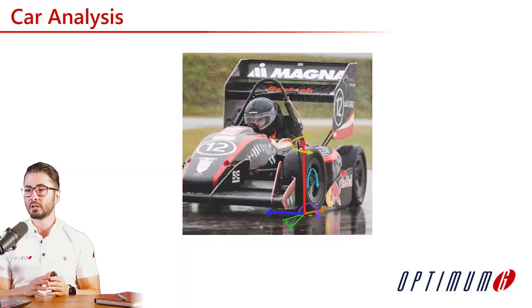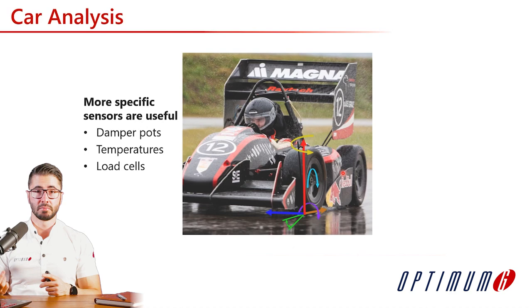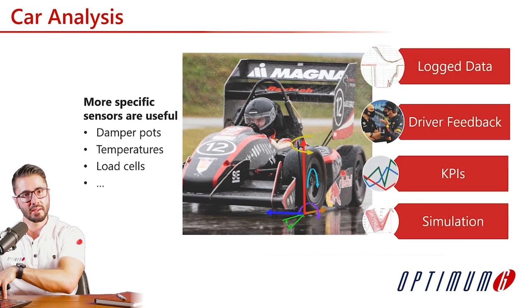We finished driver analysis — you saw how much we can do with very few sensors. Next is car analysis, which requires more sensors: damper pots, temperatures for tires and brakes, load cells on suspension components to get wheel loads and downforce. We can look at logged data, driver feedback, KPIs and metrics, or use simulation and compare with real data.